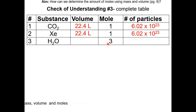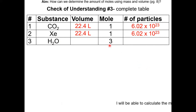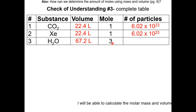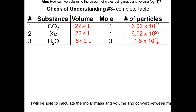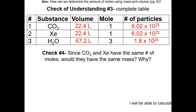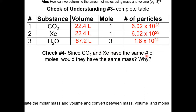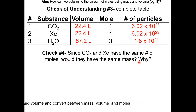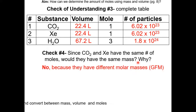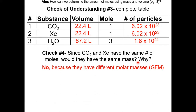For H2O, we have three moles. Since one mole is 22.4 liters, three moles would be 67.2 liters. The number of particles is 3 × 6.02 × 10²³, which is 1.8 × 10²⁴. Reflection number 4: since CO2 and xenon have the same number of moles, would they have the same mass? Even though they have the same volume, they will not have the same mass because they have different GFMs — CO2 and xenon have different molar masses, so they will have different mass.